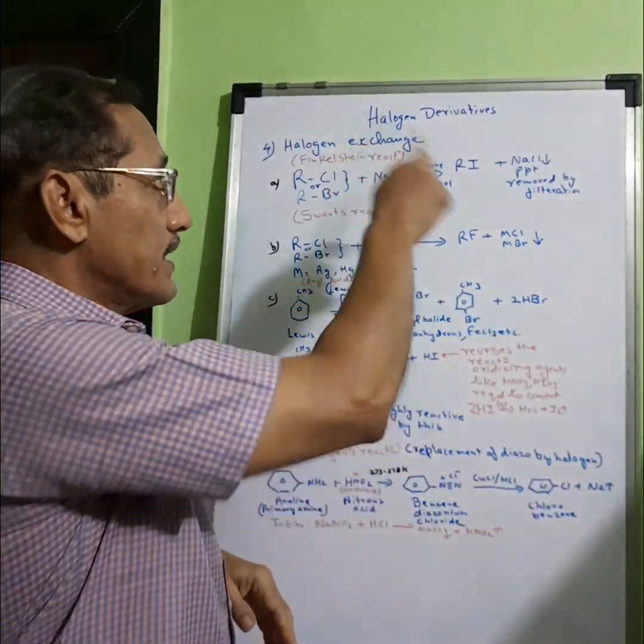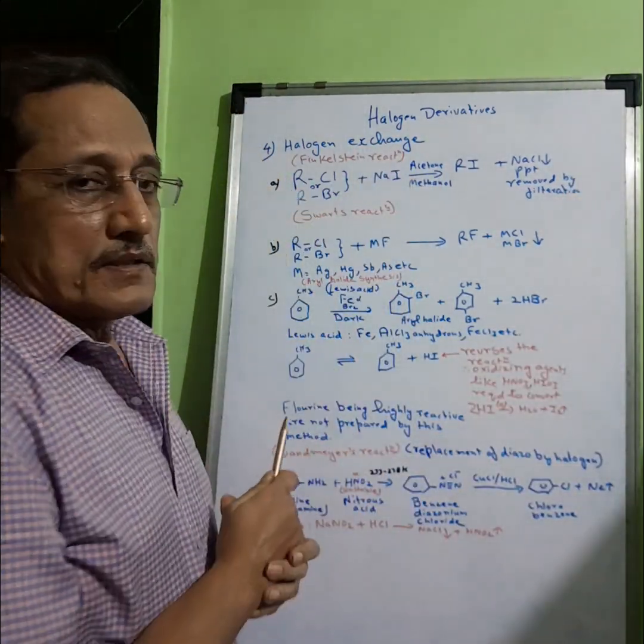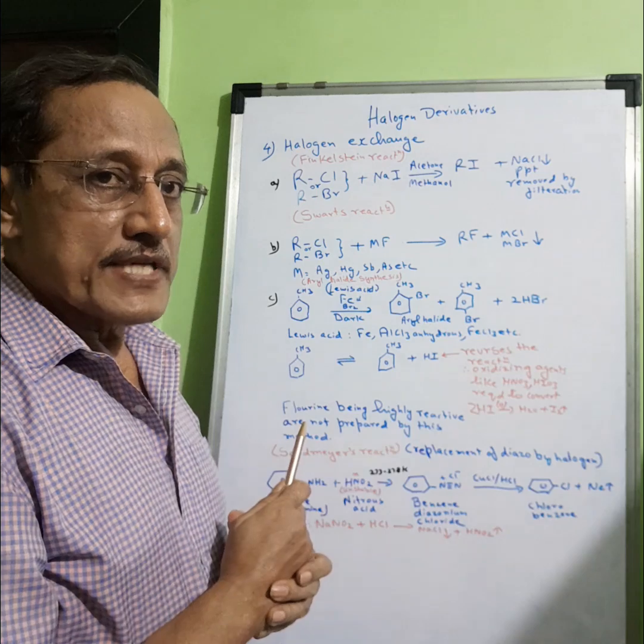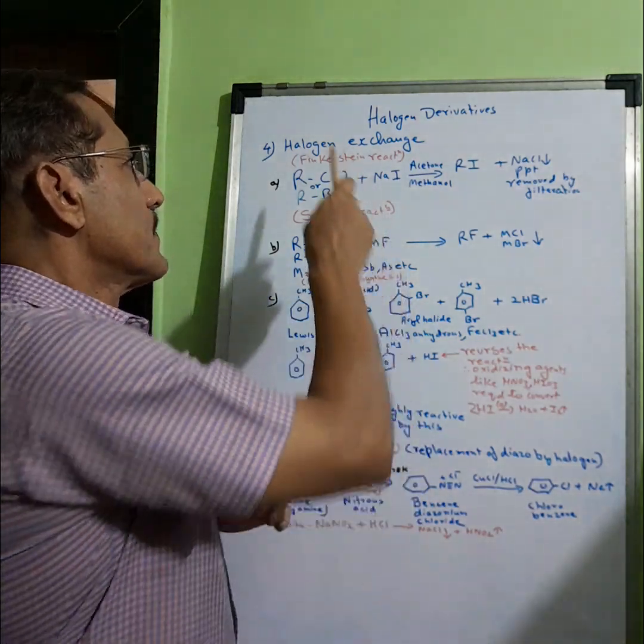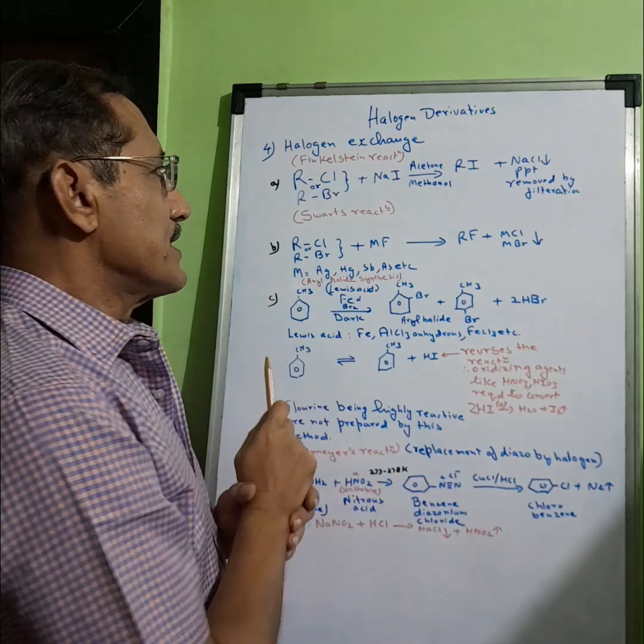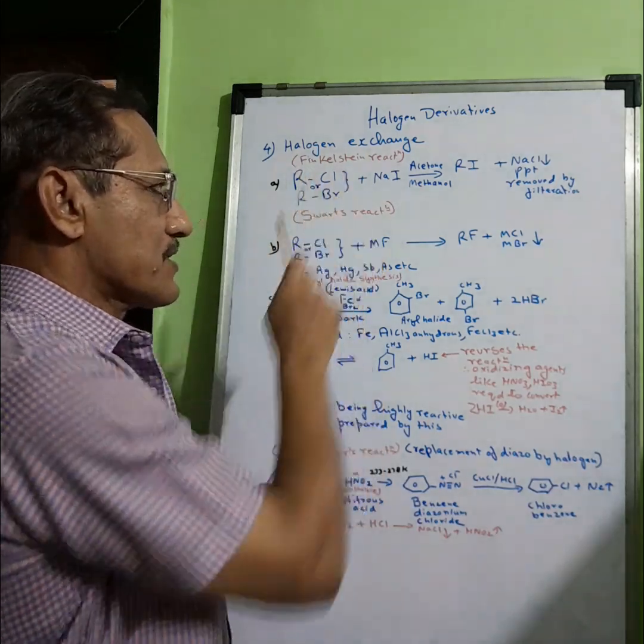Hi guys, let's get into halogen derivatives. The fourth reaction for synthesis of halides is halogen exchange, and the name is Finkelstein reaction.